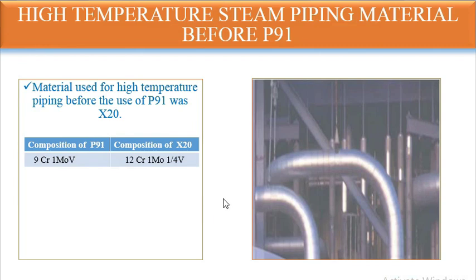Before P91, there was another material used for high-temperature steam piping called X20. X20 was the previous material; now it has been upgraded to P91. The composition of P91 is 9Cr1MoV, and the composition of X20 is 12Cr1Mo¼V. We are no longer using X20 — we are now using P91 material.